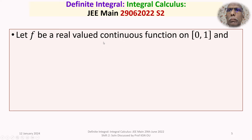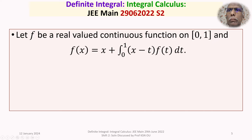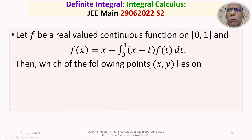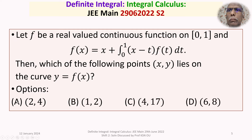The given question is: let f be a real-valued continuous function on the closed interval [0, 1], and f(x) = x + ∫₀¹ (x − t)·f(t) dt. Then which of the following points (x, y) lies on the curve y = f(x)? The four options are: (a) (2, 4), (b) (1, 2), (c) (4, 17), (d) (6, 8).